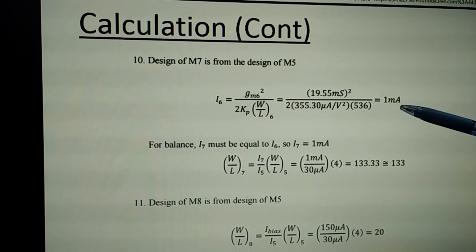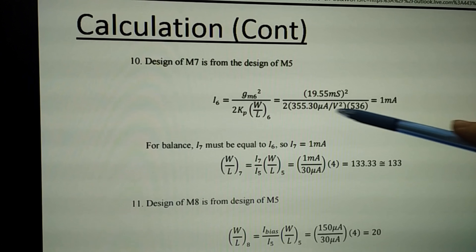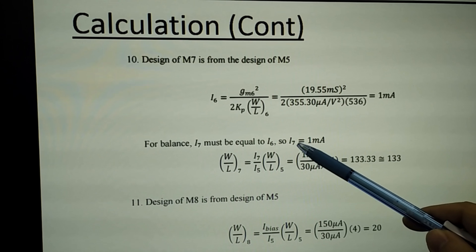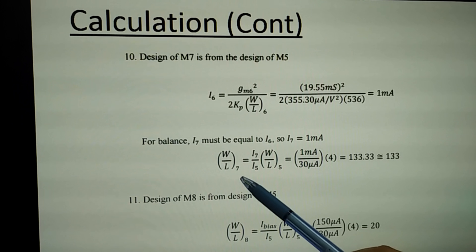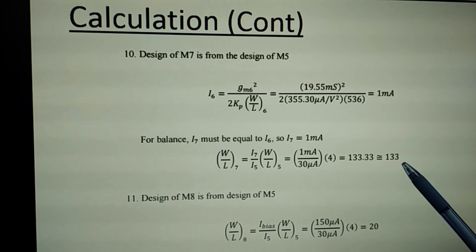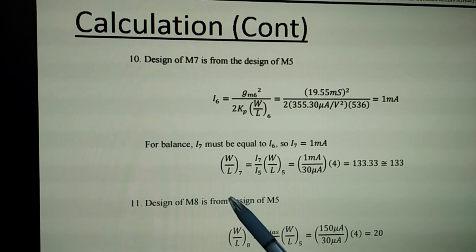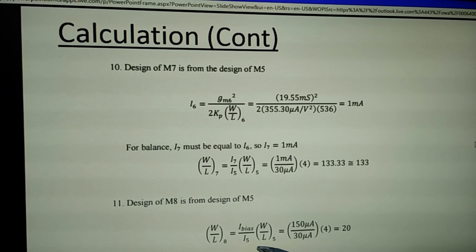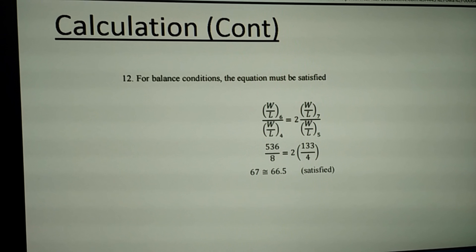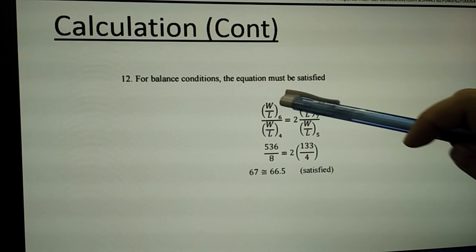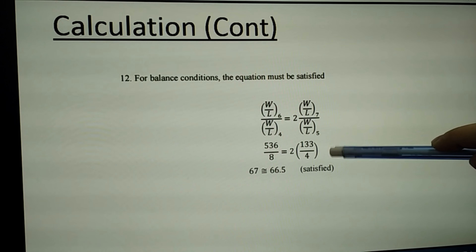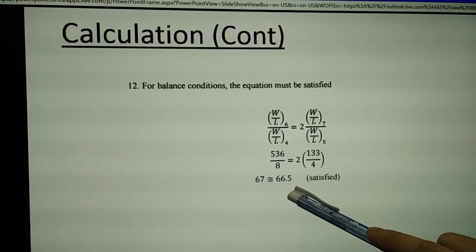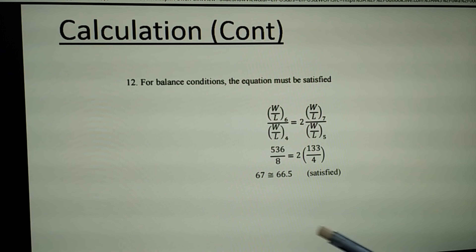For M7, I7 must equal I6 to balance the circuit. I7 equals 1 milliampere, giving an aspect ratio for M7 of 133. For M8, it is designed from M5, giving an aspect ratio of 20. The balance condition equation must be satisfied; the calculated value is approximately 66.5, which satisfies the condition, confirming our calculation is correct.